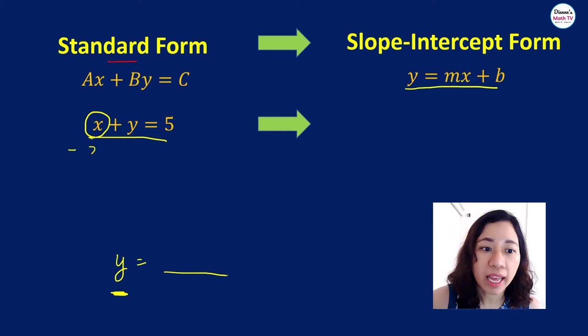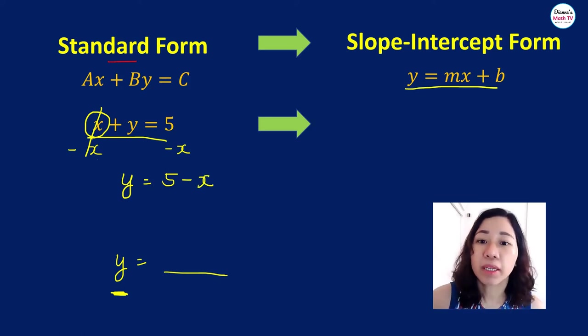We will subtract x on both sides of the equation. Because x minus x, that would now be 0. So basically, what we're doing is just the opposite operation. If it's x here, you subtract x, right? So what is left?